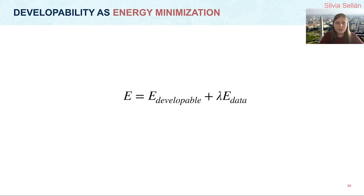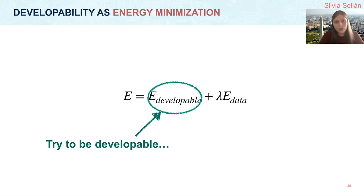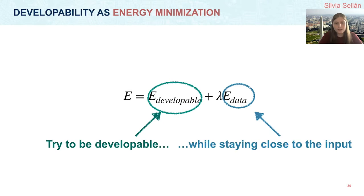We will frame obtaining the output heightfield as an energy minimization problem. The energy will need to include two parts: one that encourages developability and one that encourages closeness to the input, together with a parameter lambda that allows the user to choose between prioritizing faithfulness or prioritizing developability.